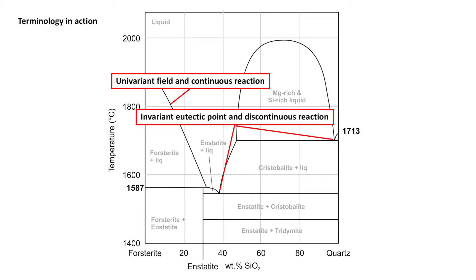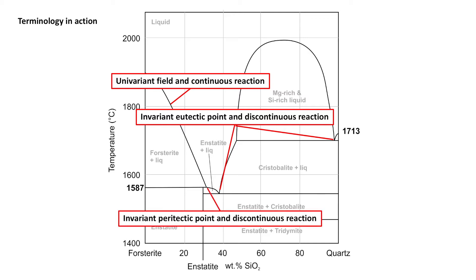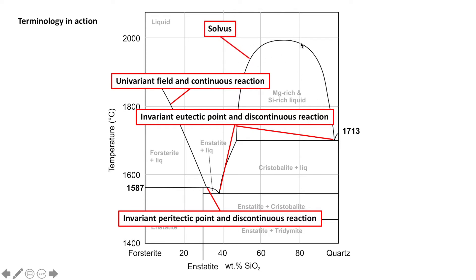Here we have our invariant eutectic points from the previous lesson — these are discontinuous reactions, occurring at a fixed temperature and composition. Then we have another invariant point we're looking at today: the peritectic point, which is another example of a discontinuous reaction. In this particular phase diagram, when the system reaches that point, forsterite will react with the liquid to produce enstatite — so we begin consuming the forsterite that has already crystallized. And up here we have the solvus, representing the solubility limit between a magnesium-rich and a silica-rich liquid, which we'll look at later.